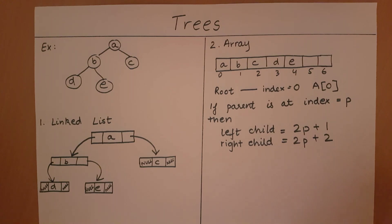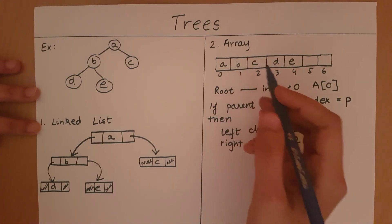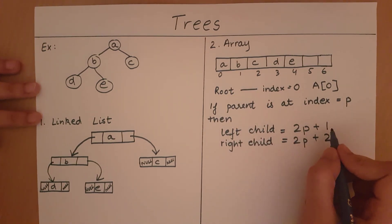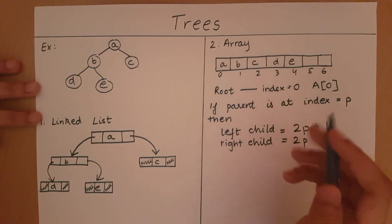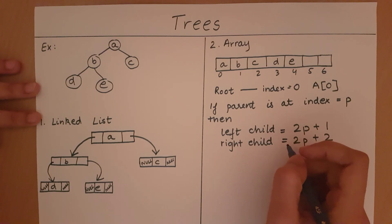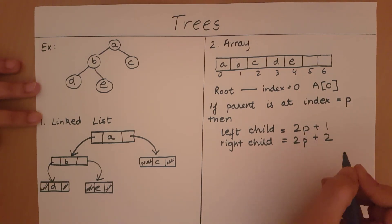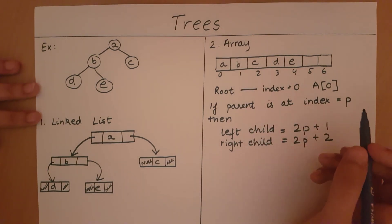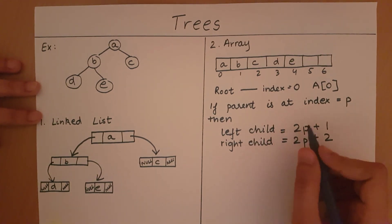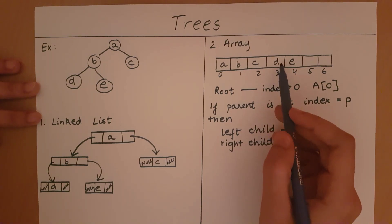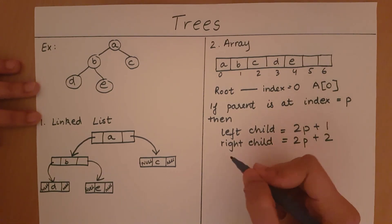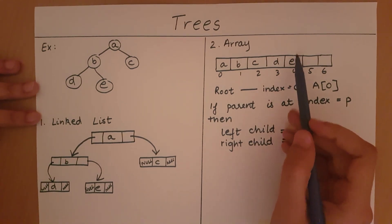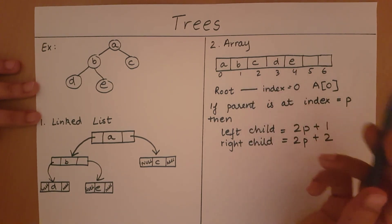Let's verify this. The children of A are B and C, and A is at index 0. The left child is at 2×0 + 1 = 1, which is correct — B is at index 1. The right child is at 2×0 + 2 = 2, which is correct — C is at index 2. For B at index 1, the left child is at 2×1 + 1 = 3, which is correct — D is at index 3. The right child is at 2×1 + 2 = 4, which is correct — E is at index 4.